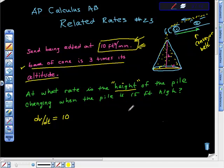So I started to set my problem up. I used DREDS. First thing I did was I drew a picture—that's the D part. This is my conveyor belt, and this is my conical pile of sand accumulating.